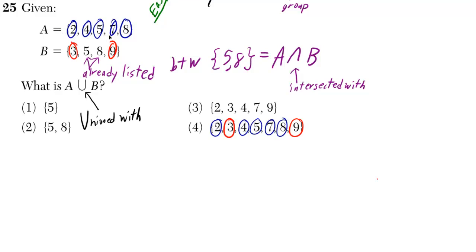So set A has 2, 4, 5, 7, and 8. Well, that's answer choice 4. Set B has 3 and 9. Well, that's also answer choice 4, and those are the two things that we didn't already list.